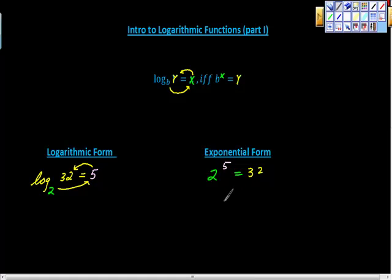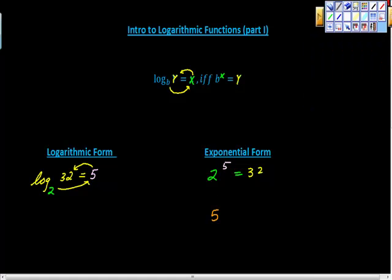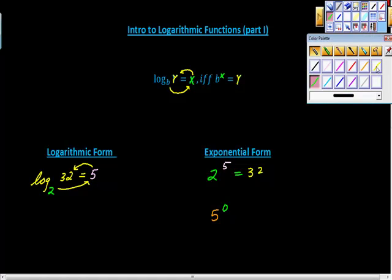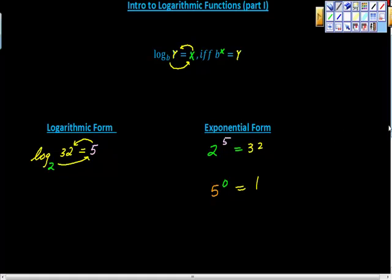All right, let's try one the opposite way. I actually like this problem a lot because it goes to an important truth here. So 5 to the power of 0 is equal to what? Is equal to 1.